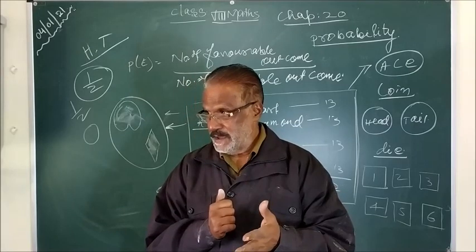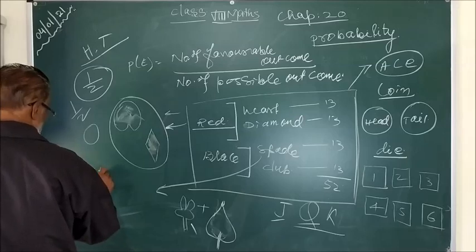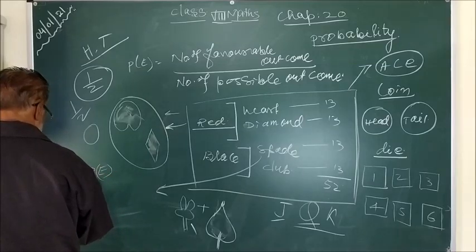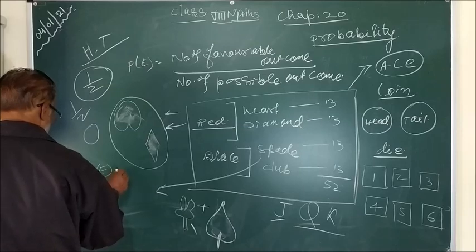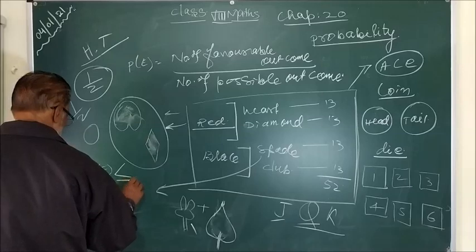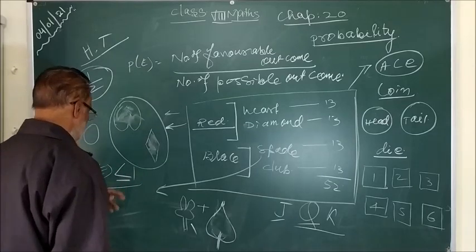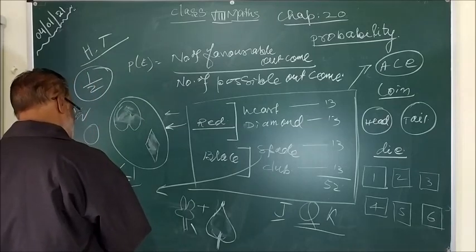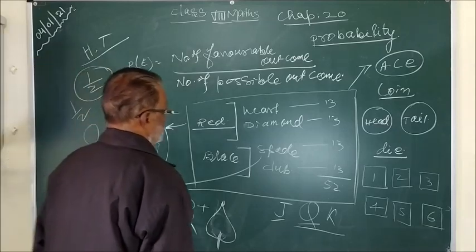So maybe, so probability of event, probability of event will be either 0 or greater than 0 or less than 1 or equal to 1. So this is a brief introduction.